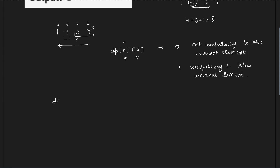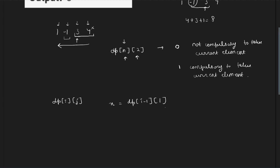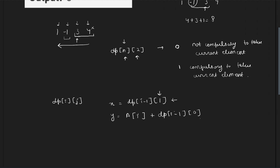At each dp[i][j], we will try to form two answers. There is one way where I do not take the current element — call this x. If I do not take the current element, then dp[i][j] equals dp[i-1][1], because since you are not taking the current element, for the next element it is compulsory to take it. If I take the current element — call this y — I add its value plus dp[i-1][0], since taking the current element means it is not compulsory for me to take the previous element.